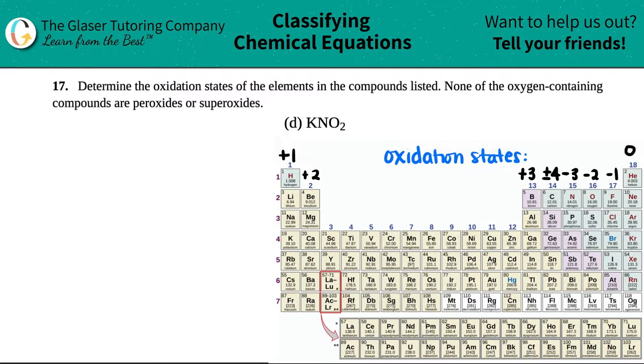Number 17: Determine the oxidation states of the elements in the compounds listed. None of the oxygen-containing compounds are peroxides or superoxides. We have letter D here, KNO2, potassium nitrite. We need to figure out what the oxidation states are, aka the charges.